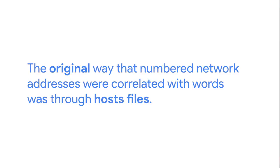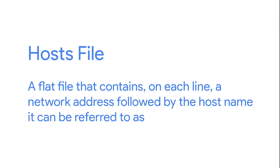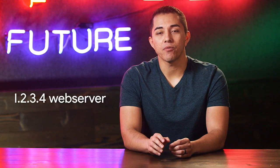Long before DNS was an established and globally available technology, it was clear to computer operators that they needed a language-based system to refer to network devices. The original way that numbered network addresses were correlated with words was through host files. A host file is a flat file that contains on each line a network address followed by the host name it can be referred to as. For example, a line in a host file might read '1.2.3.4 webserver', meaning a user could refer to 'webserver' instead of the IP 1.2.3.4.